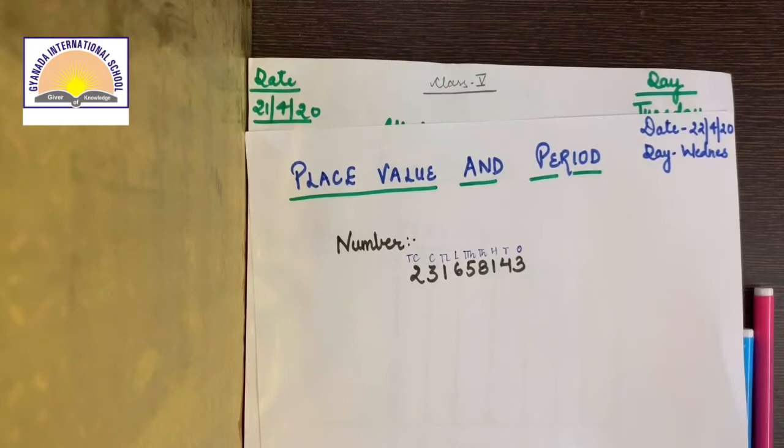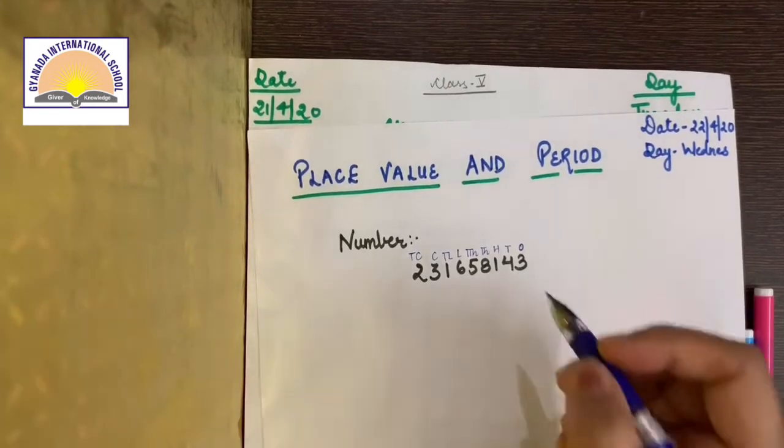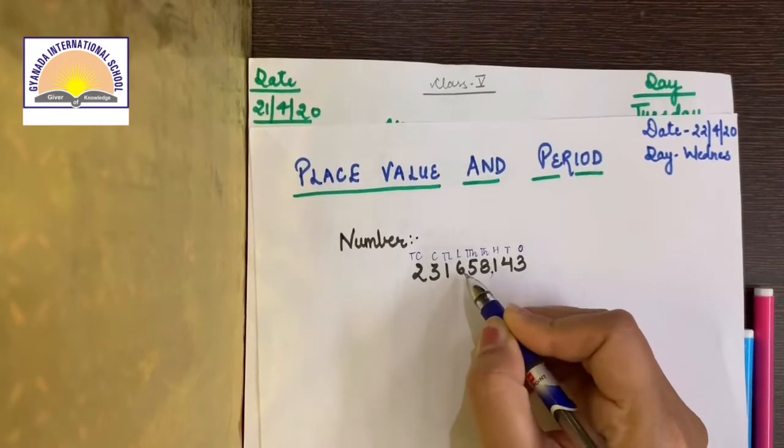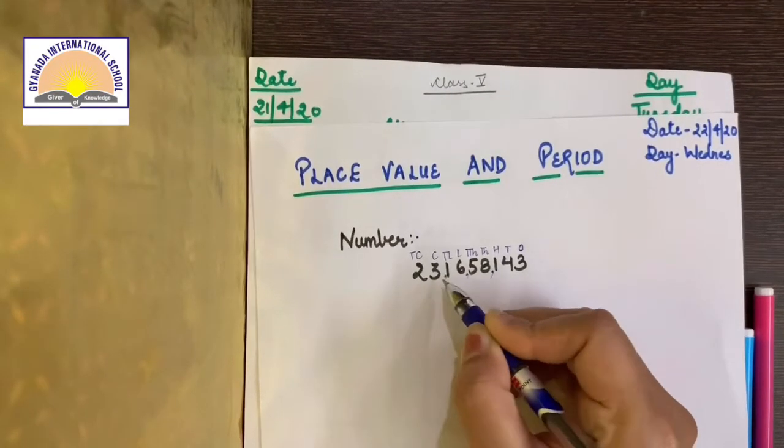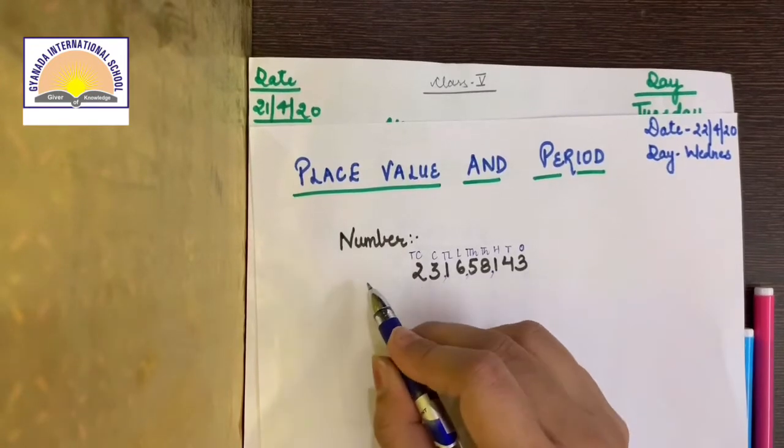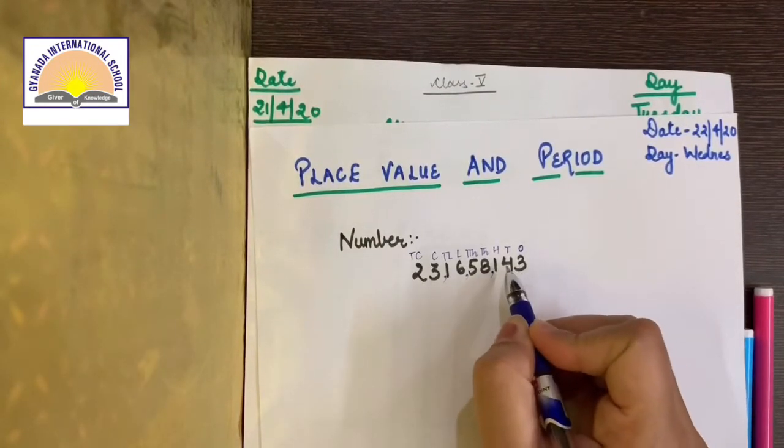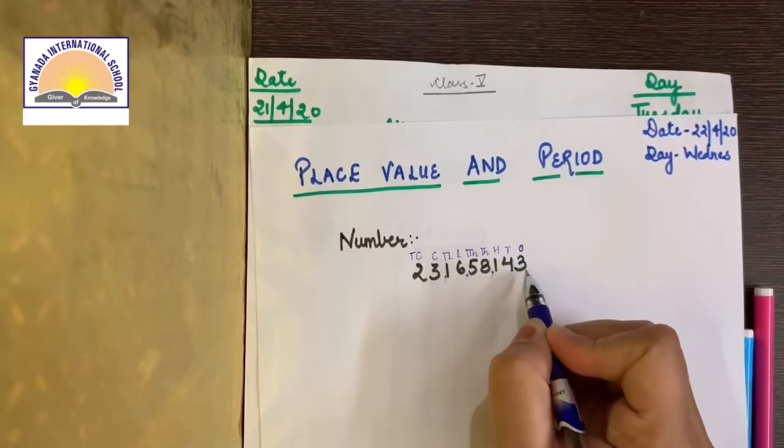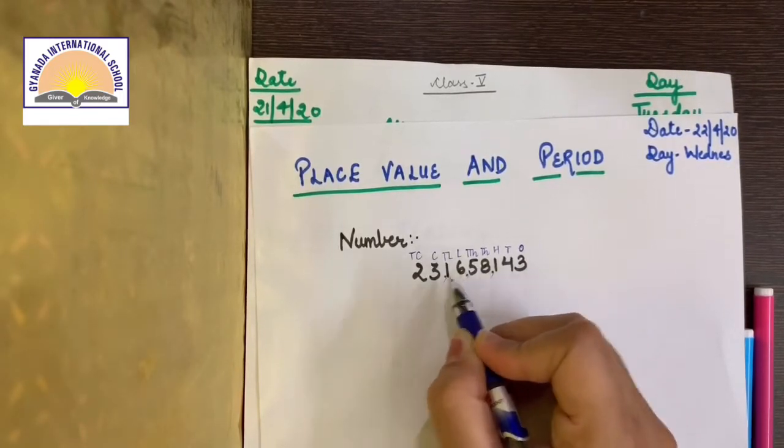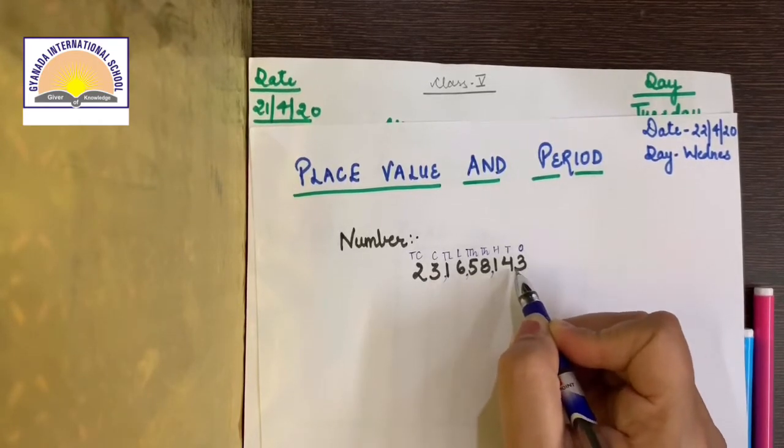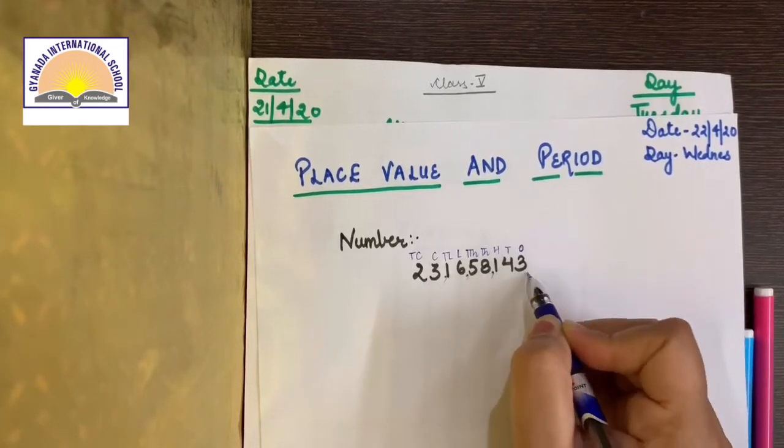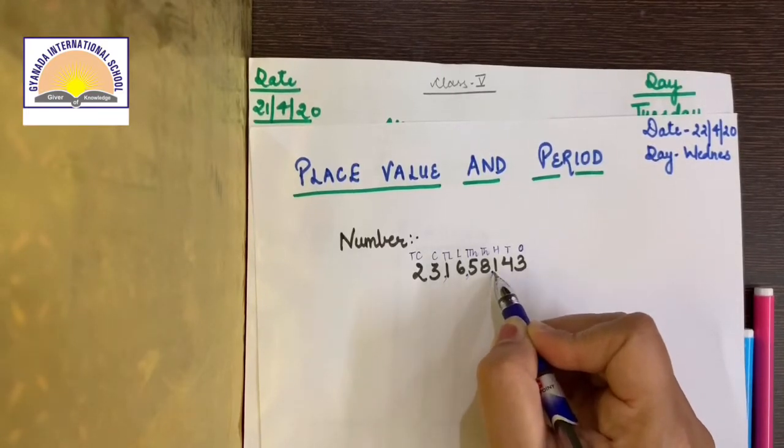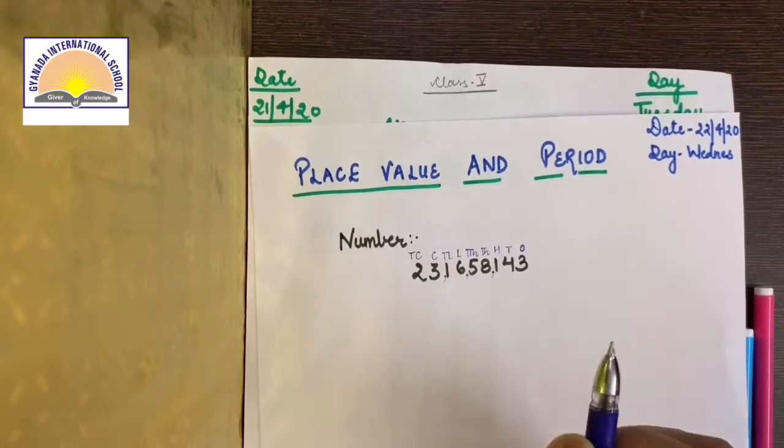The second step is to put commas. How do we put commas? 1, 2, 3, comma, 1, 2, comma, 1, 2, comma, 1, 2. There is no more number. I told you you have to put commas after every two digits. Only in the first case you put it after three digits, then after two digits. Starting when we start, then three digits will be comma. We will start once place. Then three digits will be comma and then two, two digits will be comma.